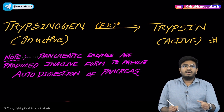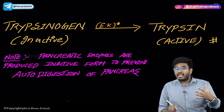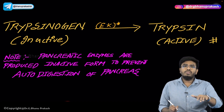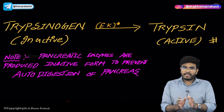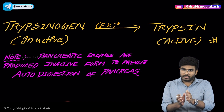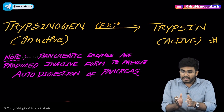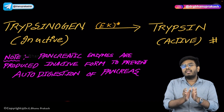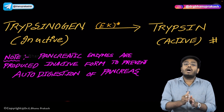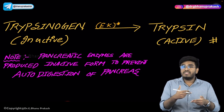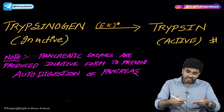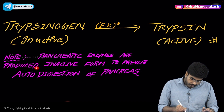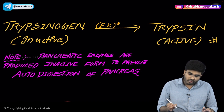Why are pancreatic enzymes like trypsinogen and chymotrypsinogen produced in an inactive form? If they were produced in an active form inside the pancreas, they would digest the pancreas itself. So inside the pancreas, all digestive enzymes are in inactive form; they come into the intestines where they get activated. Pancreatic enzymes are produced in inactive form to prevent autodigestion of the pancreas.